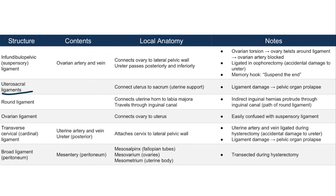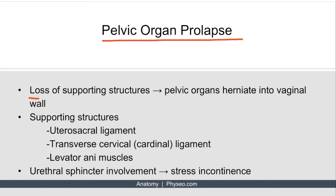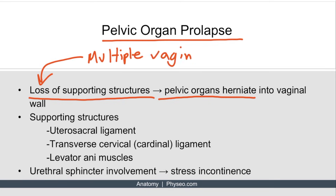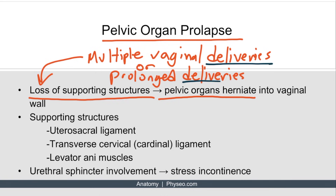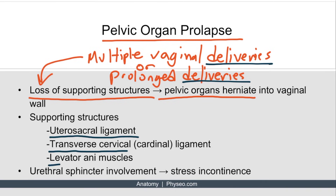This ligament is really important because if it's damaged, this can lead to pelvic organ prolapse. Pelvic organ prolapse occurs when there's loss of supporting structures, and pelvic organs herniate into the vaginal wall. This loss of support often occurs in older women who have had multiple vaginal deliveries or prolonged deliveries — delivering babies actually weakens the supporting structures. Other important supporting structures include the transverse cervical ligament and the levator ani muscles.